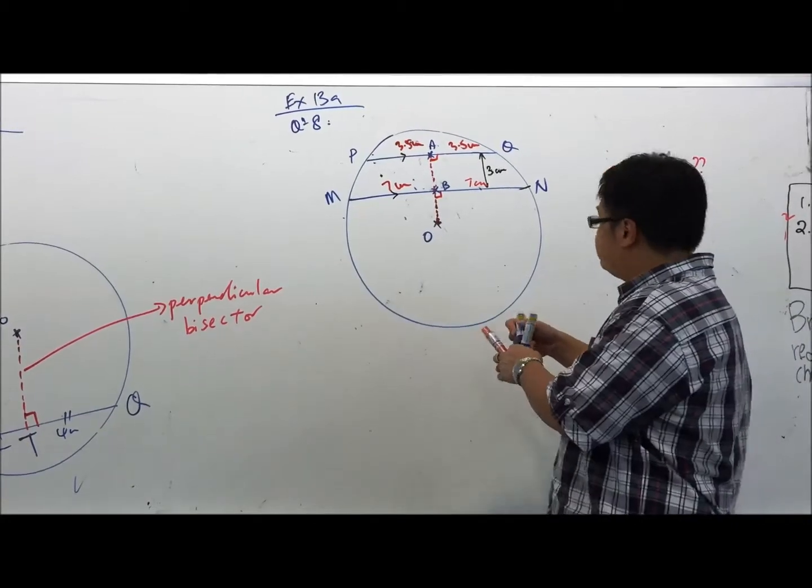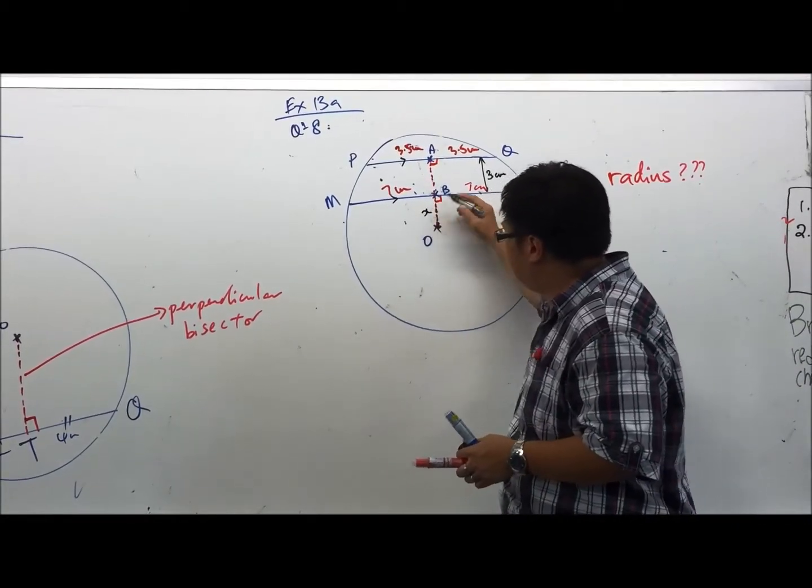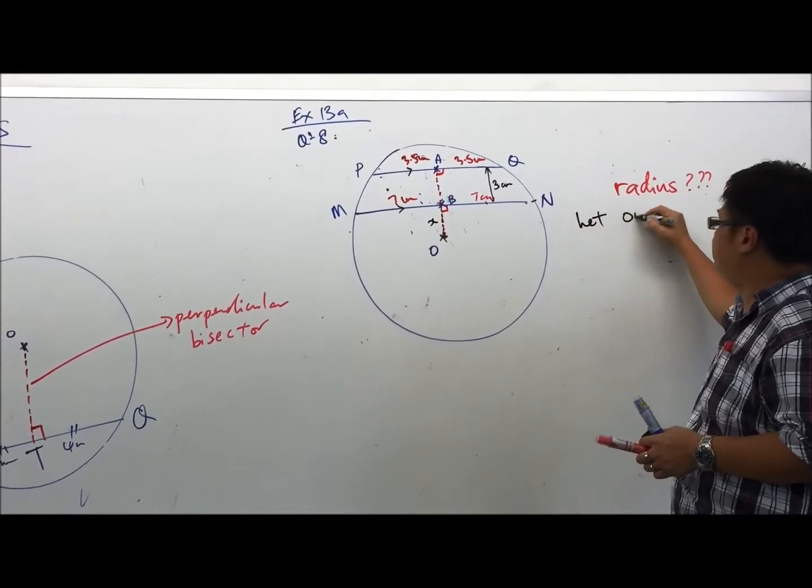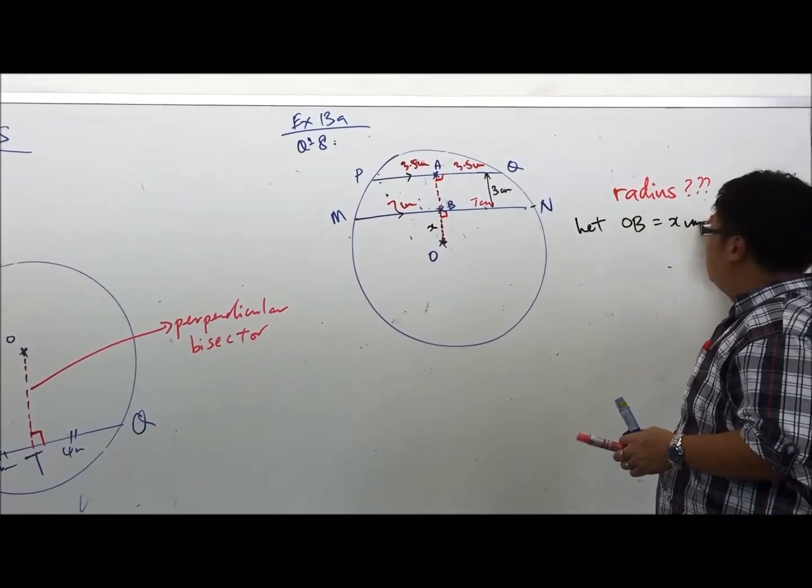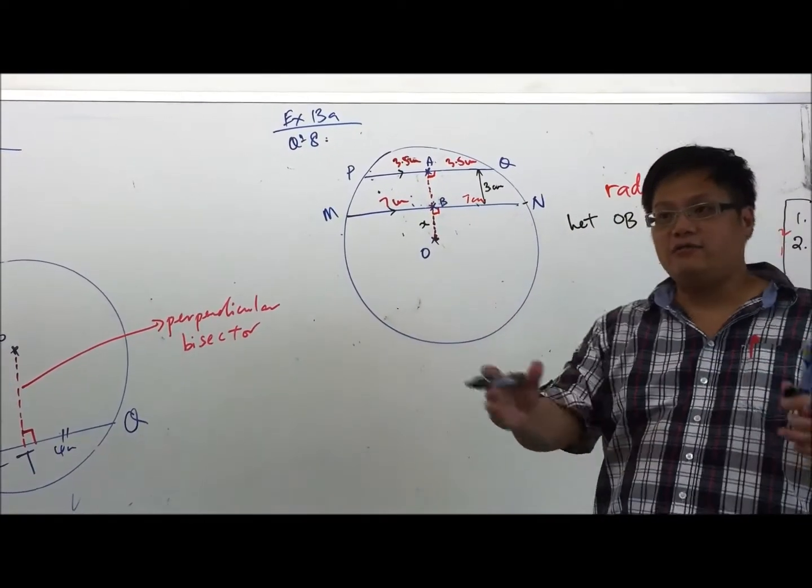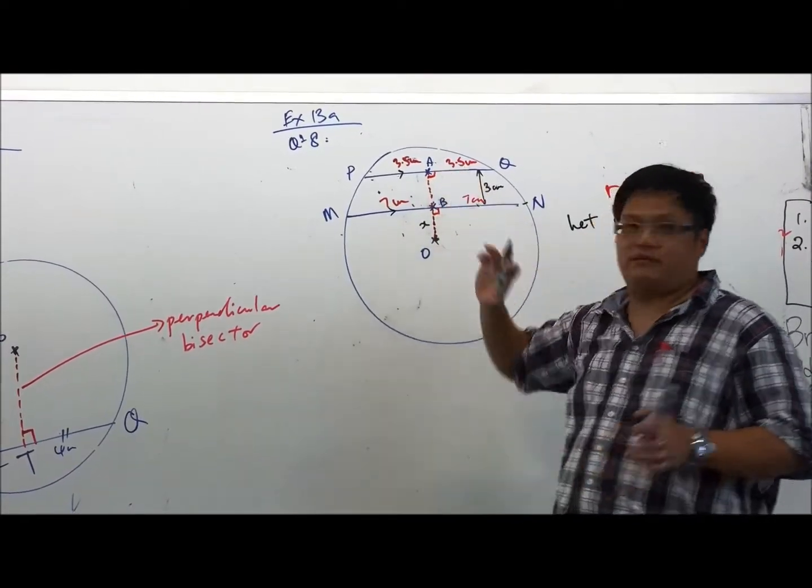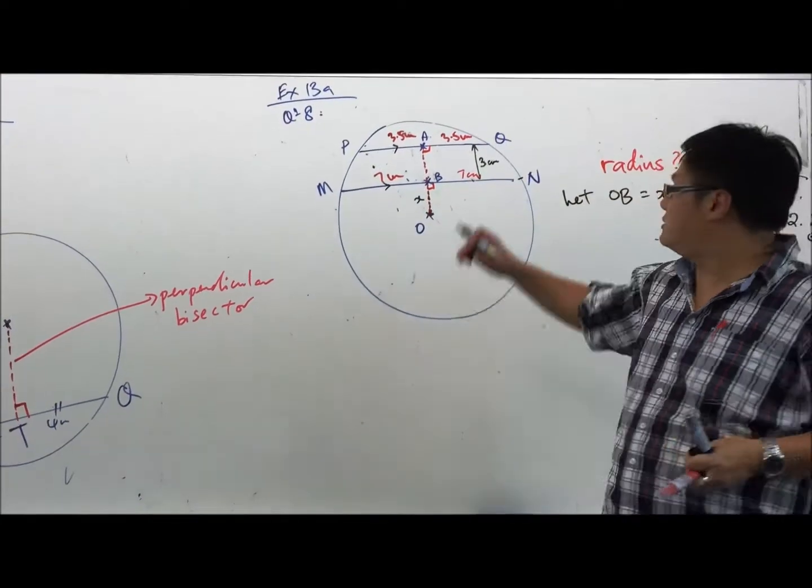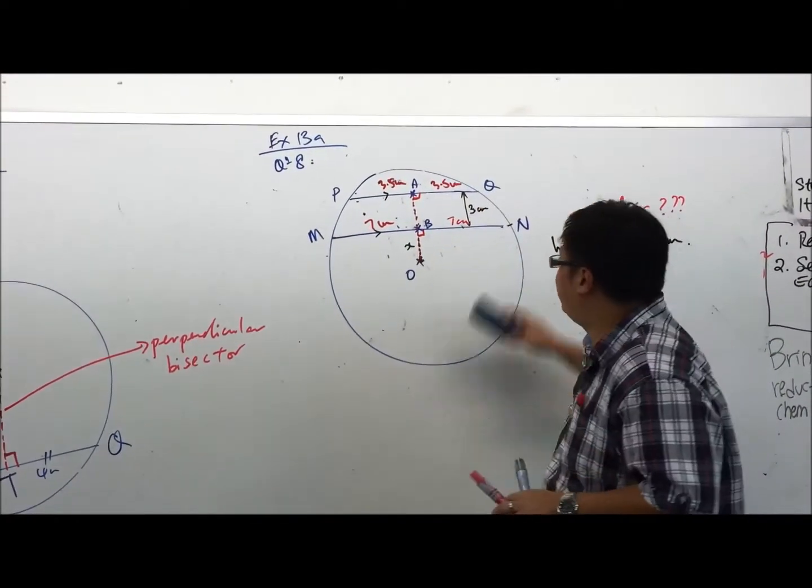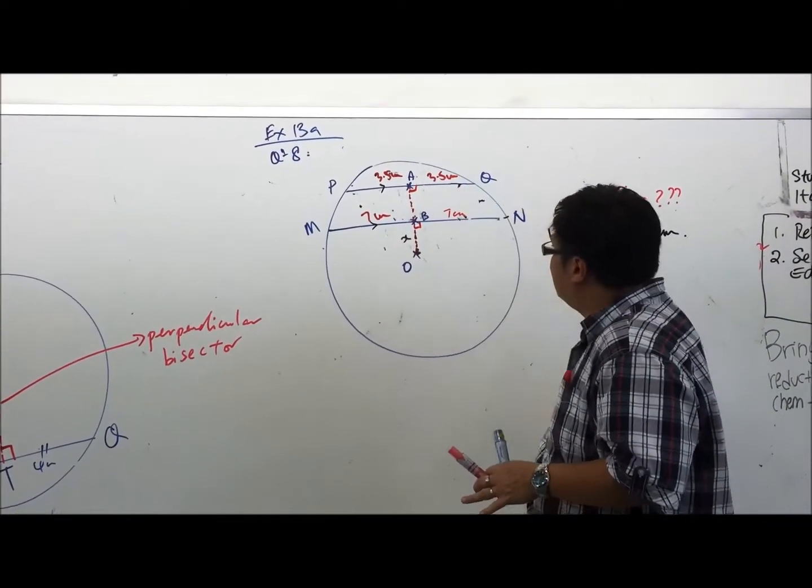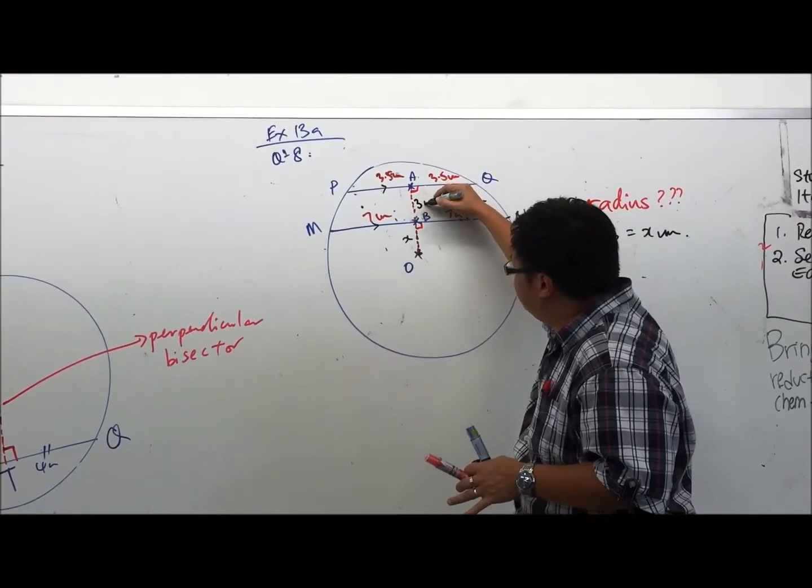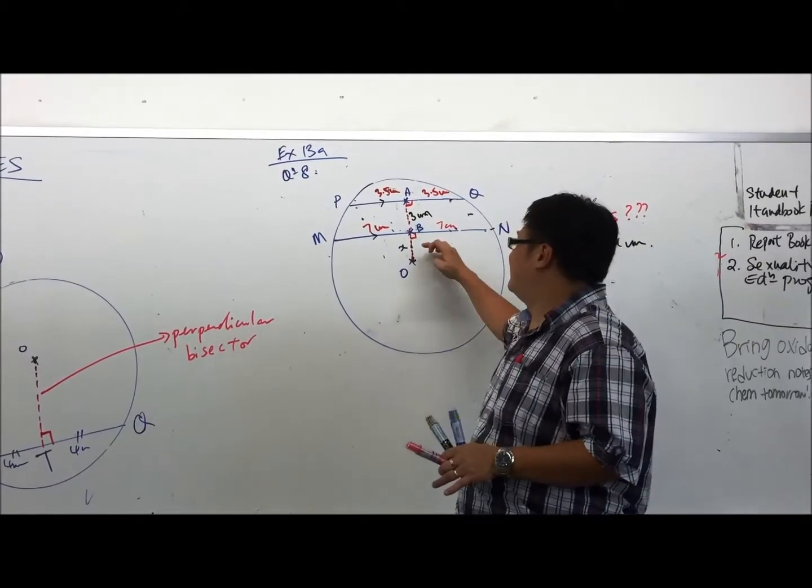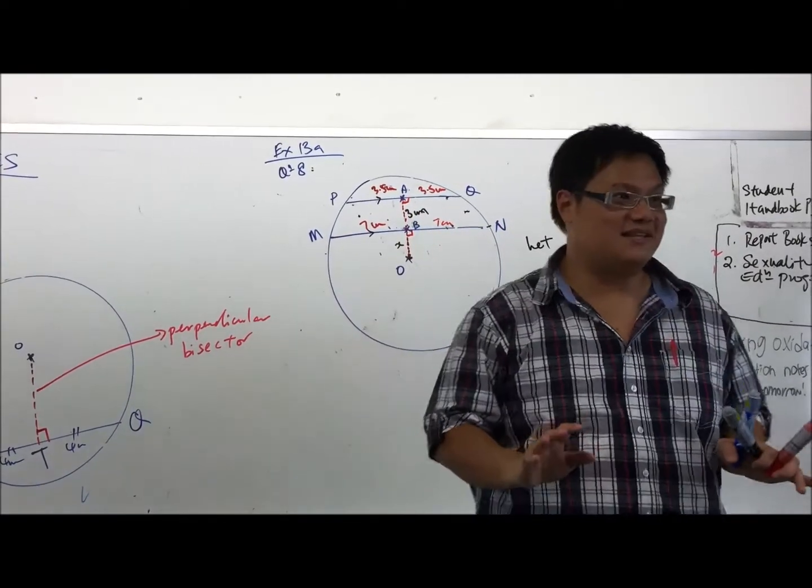What else can I do with this problem? Watch here, don't blink. I let this length be x. I let the length of OB be x. If OB is x, can you tell me what is the length of OA? X plus 3. Because the two chords are 3 cm apart, right? So from this information, I know that this is 3 cm. OA is x plus 3 cm.